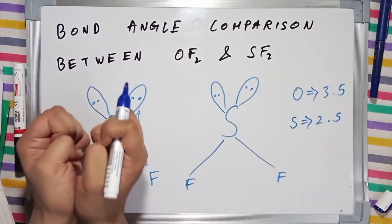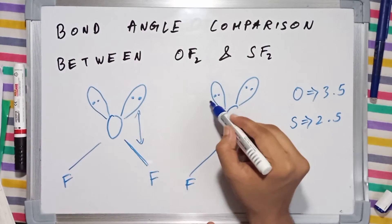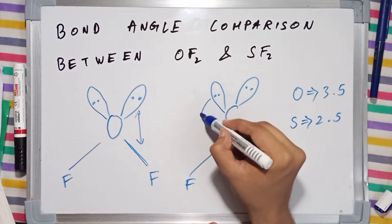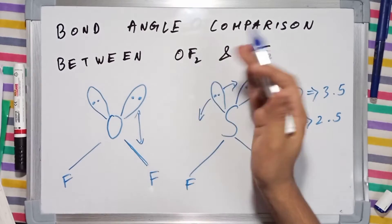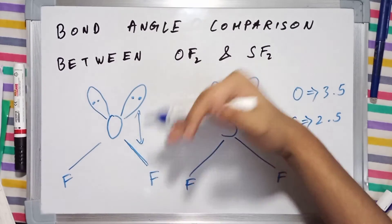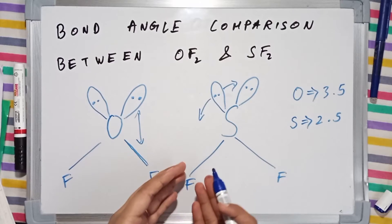Whereas for sulfur, these lone pairs will have an oscillatory kind of movement. When this lone pair comes to this side, it will exert a repulsion on this bond because this bond